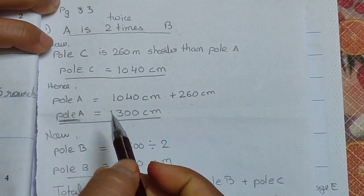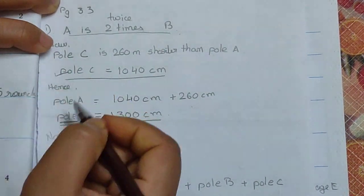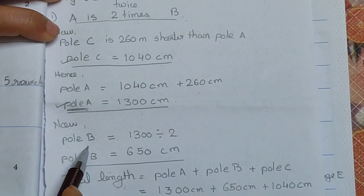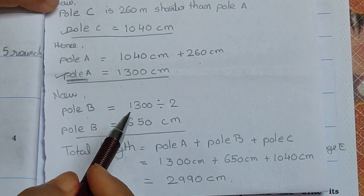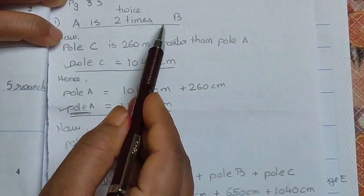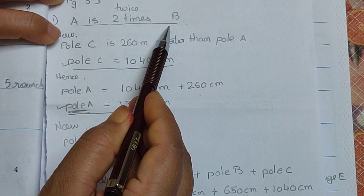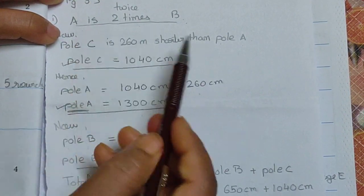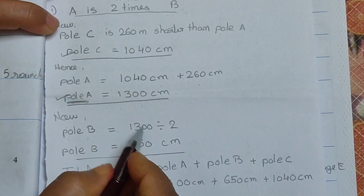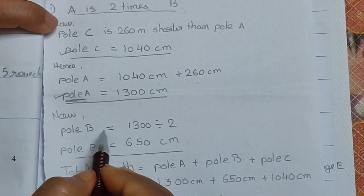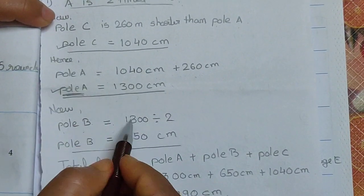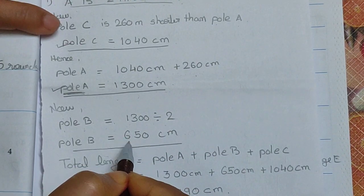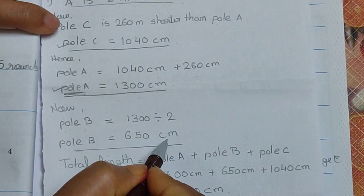Now we have pole C and pole A. We have to find pole B. It is given that A is 2 times B, so B is half of A. So pole B equals 1300 divided by 2, which gives us 650 cm.